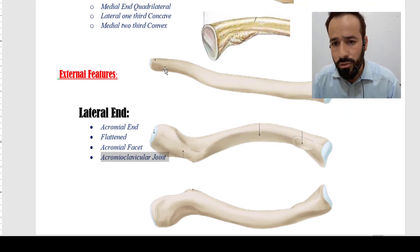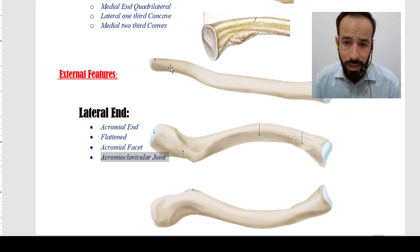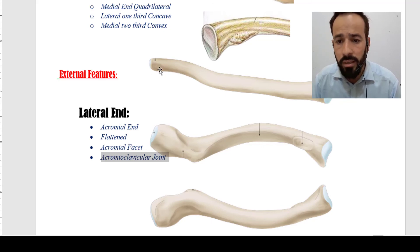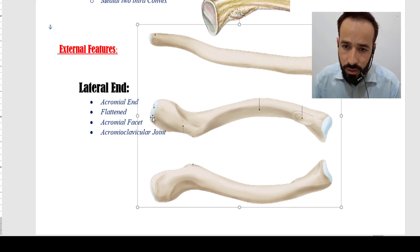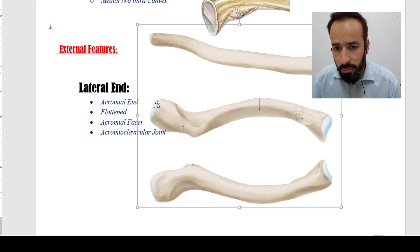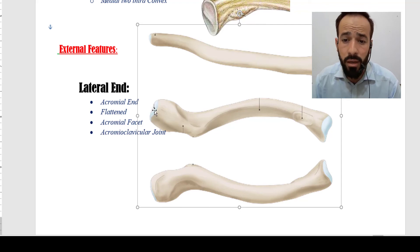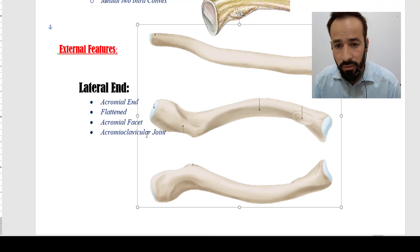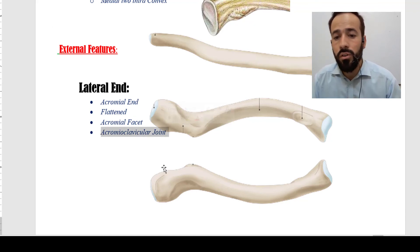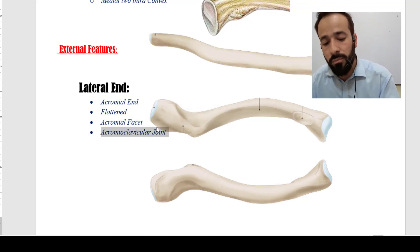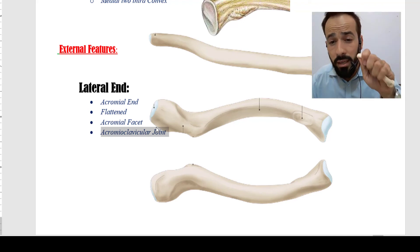You can see in the image — following the pointer of the mouse — the lateral end is flattened and is also known as the acromial end. There is a facet visible here, shown in a slightly bluish color due to the cartilage on its surface. This is the acromial facet, and it combines with the acromion process of the scapula to form the acromioclavicular joint.